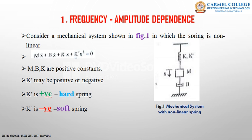The first characteristic is frequency amplitude dependence. Frequency amplitude dependence is one of the most fundamental characteristics of oscillations of a nonlinear system. For explaining this, consider a mechanical system consisting of mass, dashpot, and spring, where the spring is nonlinear.